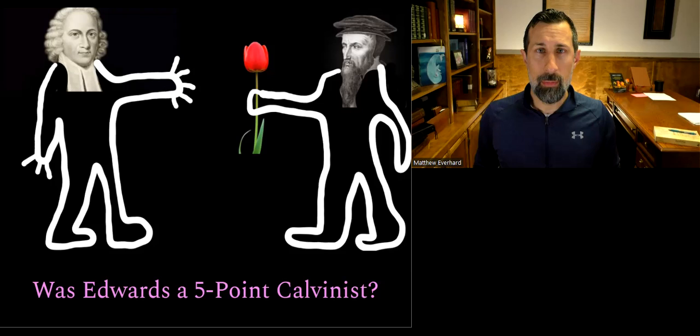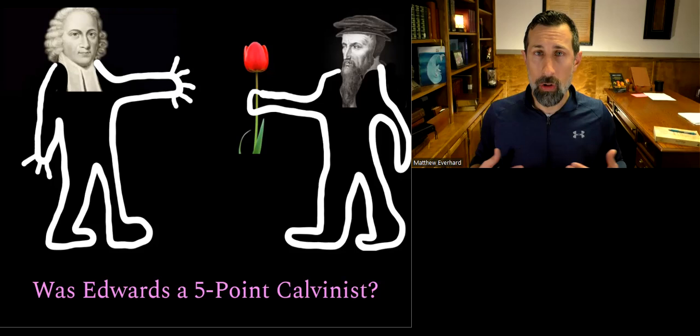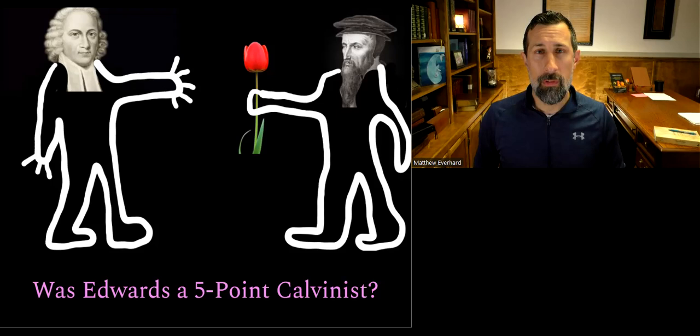When we talk about five-point Calvinism, it is a little bit anachronistic to suggest these five points came from John Calvin himself. I personally believe Calvin would have held to all five points. Some people will tell you that if you read through the Institutes, you don't see the L for limited atonement very clearly. That point is greatly debated in the Calvin versus the Calvinists controversy.